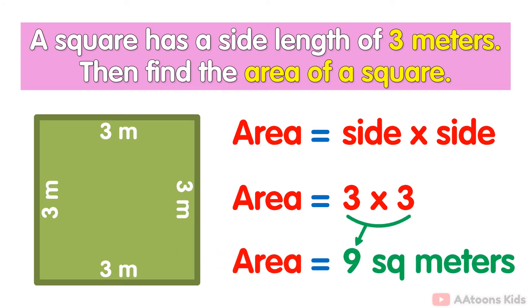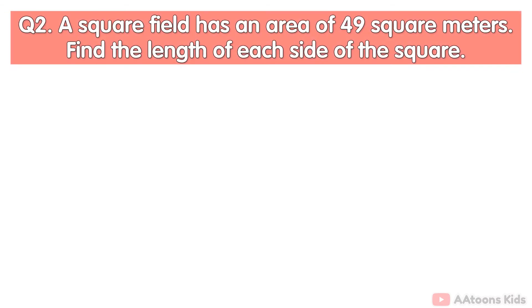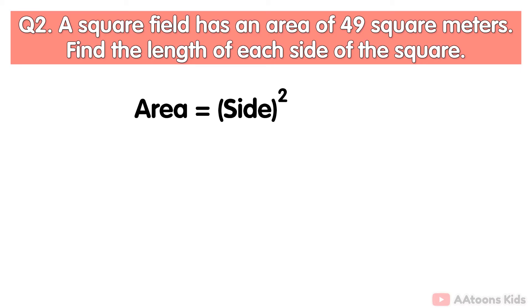So the area of the square is 9 square meters. Example 2: a square field has an area of 49 square meters, find the length of each side of the square. Area of a square equals side squared. First, we put the value of area in the formula — area is given as 49 square meters.